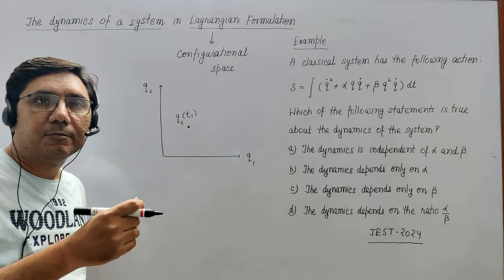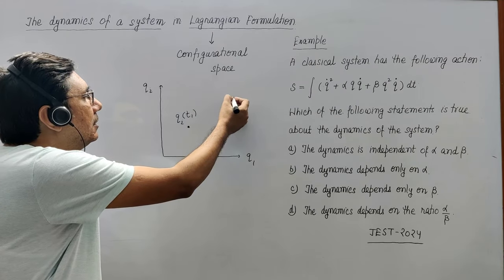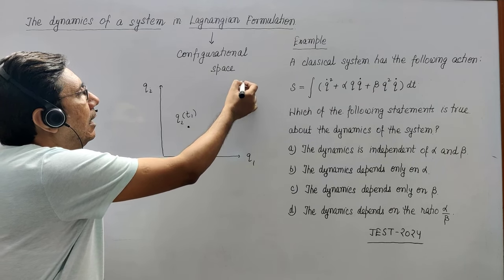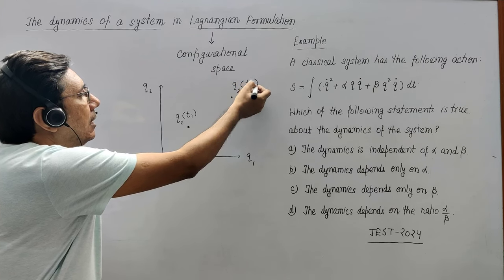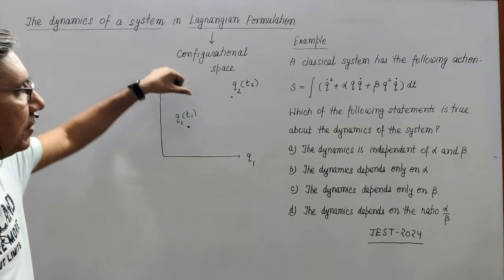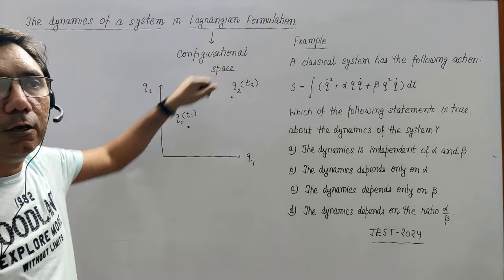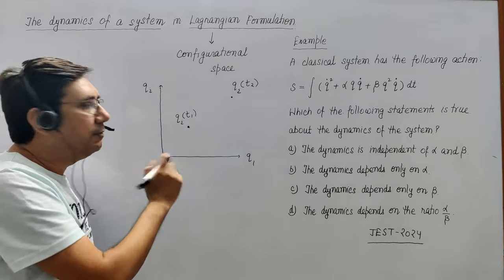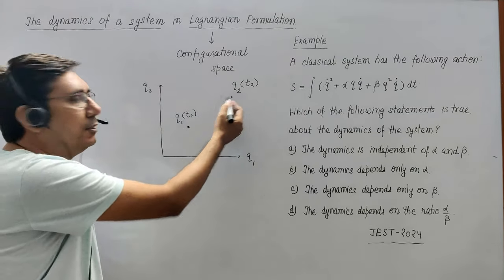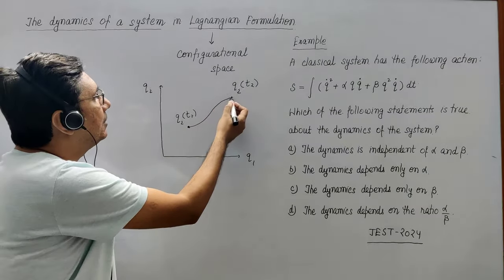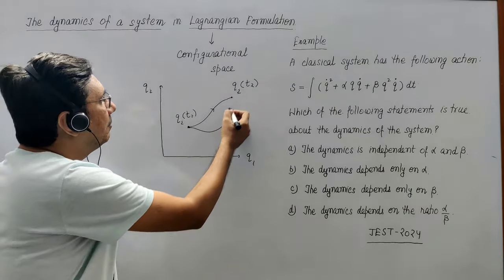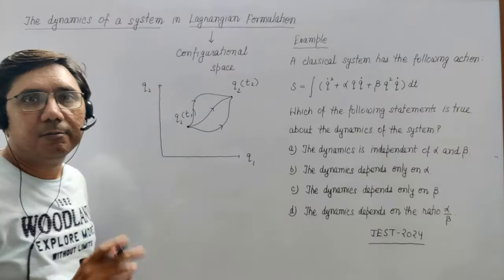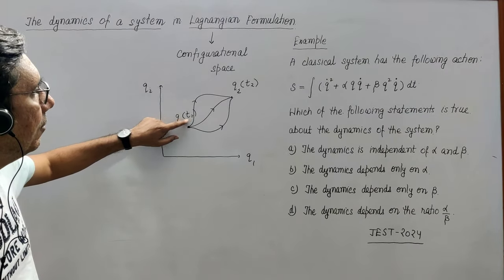Now after some time, its state is here — this is qf, or you can write qi at time t2. So these are two states of the same system at time t1 and t2. The system can evolve from here to here in many ways. There are many possible paths — this path can be like this, another path can be like this. So there are many paths available by which the system can evolve from t1 to t2.